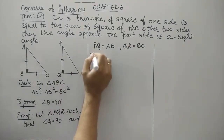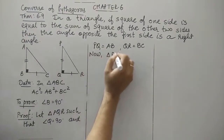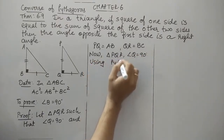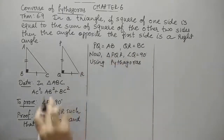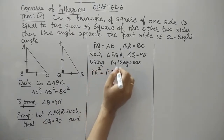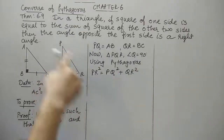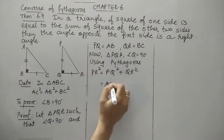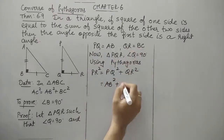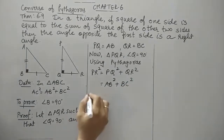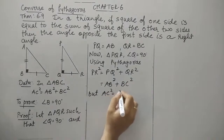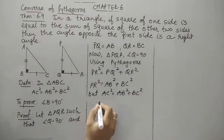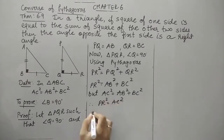For triangle PQR, as angle Q is a right angle, I will use Pythagoras. Using Pythagoras for triangle PQR: PQ² + QR² = PR². Since PQ = AB, PQ² = AB². Since QR = BC, QR² = BC². But in the given data, AC² = AB² + BC². Therefore AB² + BC² = PR², so PR² = AC², which gives us PR = AC.